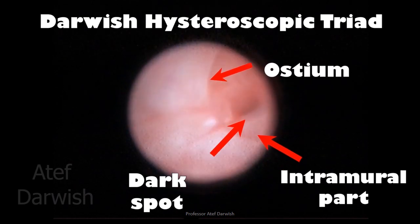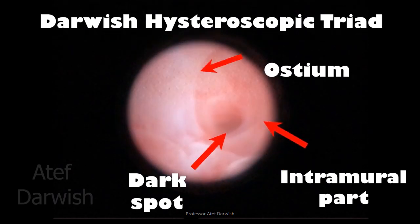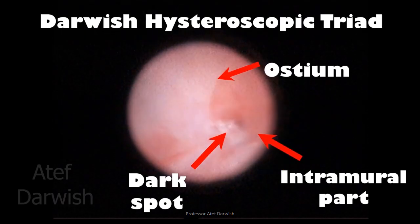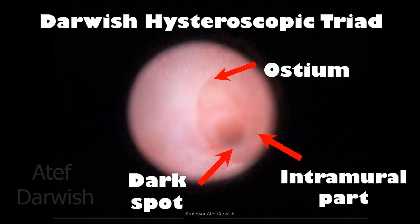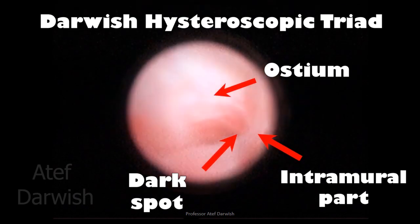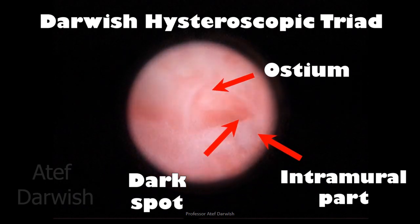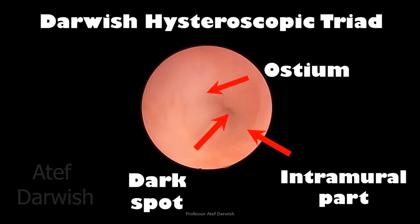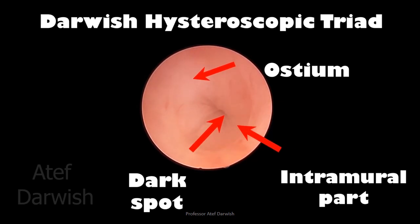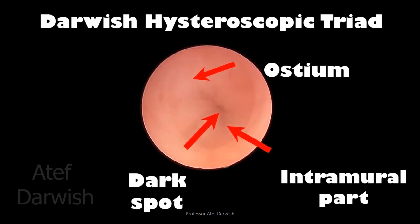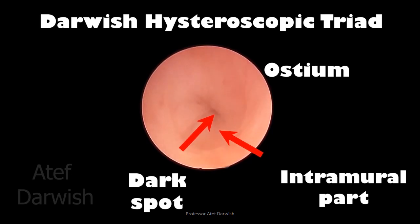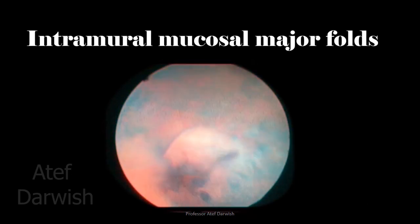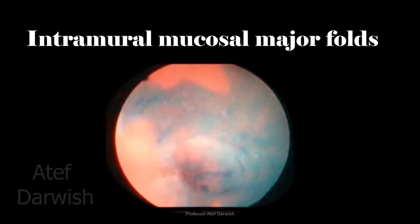When you concentrate on this triad — the ostium, the intramural part, and the dark spot — this is the starting point for how to assess the fallopian tube via hysteroscopy. There are different shapes of the hysteroscopic Darwish triad, and you can evaluate it with further examination and gain a lot of experience.